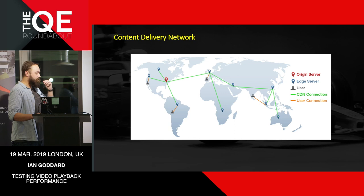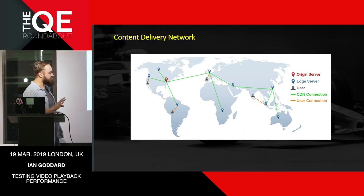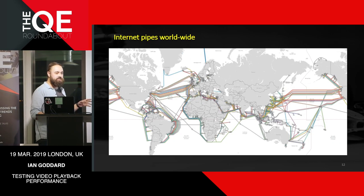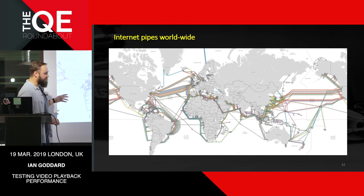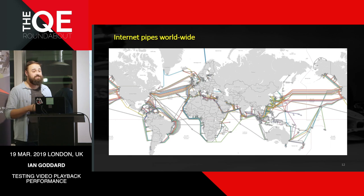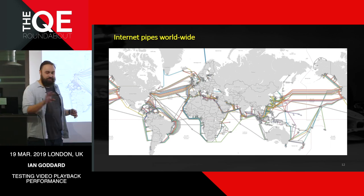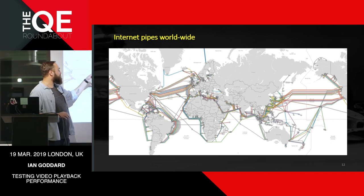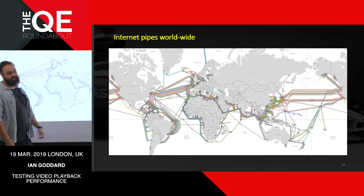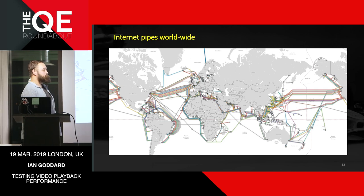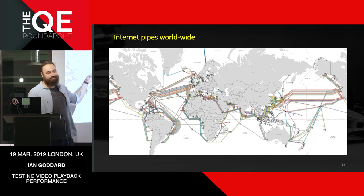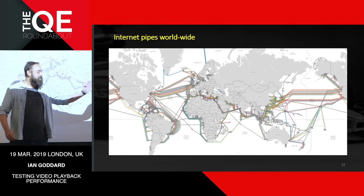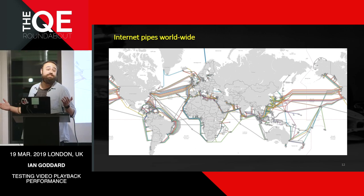Here's a map of the undersea pipelines for the internet — this is how the internet gets around the world. When somebody says it's wireless, it's not — it's on pipes under the sea. If you're trying to get content from New York to Australia, it takes a long time through all those switches. Geographically, it's much closer for someone in Australia to pick up content from India. Shorter distance means quicker content delivery — it's as simple as that.